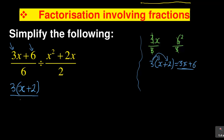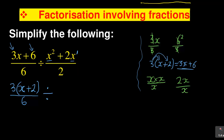Now we do the same for the second fraction. We factorize the numerator x² + 2x. You can see that x is common to both terms — x² has power two and 2x has power one, so we take the smallest power, which is x. Dividing: x² ÷ x = x, and 2x ÷ x = 2. So x² + 2x factorizes to x(x + 2), divided by 2.